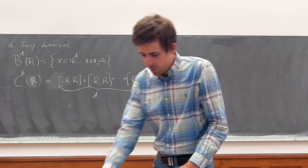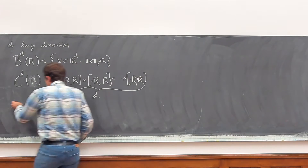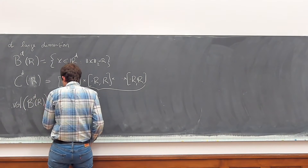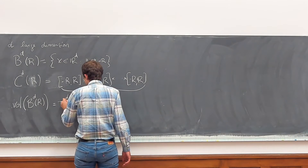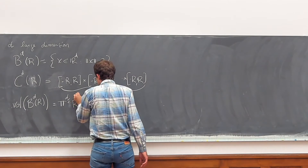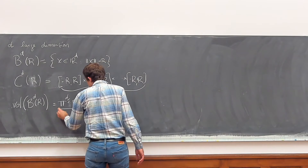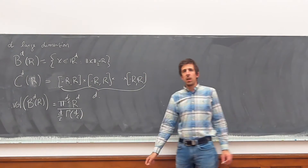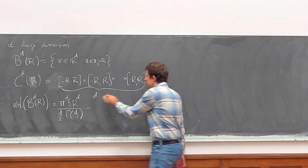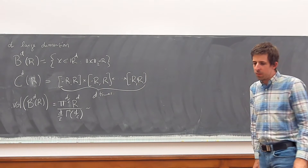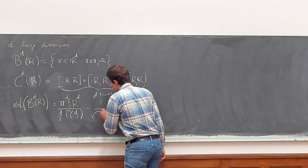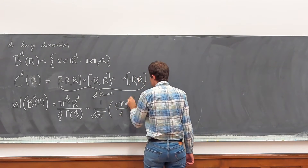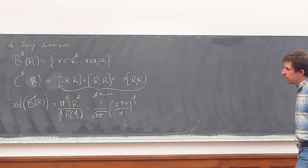Now let's look at the volumes of these objects. You can work out the integrals — the volume of the ball in d dimensions of radius R is pi^(d/2) times R^d divided by the gamma function of d/2 plus 1. The gamma function is like a factorial. Asymptotically, this scales as (sqrt(d/pi))^d times R^d, so the volume goes to zero very, very quickly as d grows.